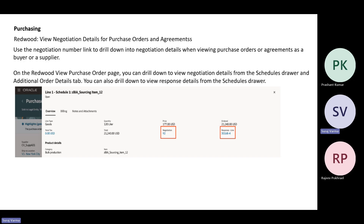The next purchasing functionality on Redwood is to view negotiation details for purchase orders and agreements. Those details are now visible on the purchase order screen — users can click on the negotiation number and drill down to view the negotiation details. This has also been added as part of the 25D update and will be visible as part of the schedule support.